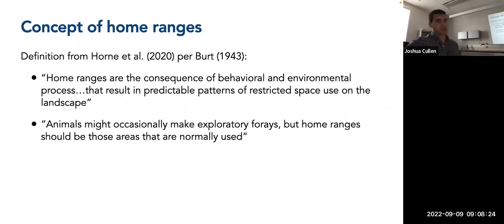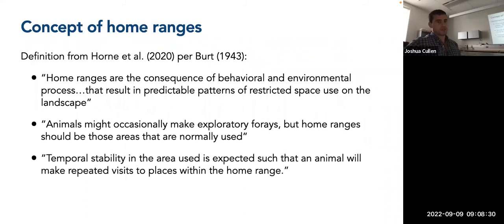Additionally, animals might occasionally make exploratory forays, but home ranges should be those areas that are normally used and temporal stability in the area used is expected such that an animal will make repeated visits to places within the home range. So home ranges are basically areas that are highly used and there's a high level of site fidelity that's essentially being exhibited here. So there might be occasional movements outside of the home range that the animal might make just to explore, to search for food or search for mate. But in general, it will stay at a given home range, potentially for the rest of its life once it's established, and that's not always the case for all species.